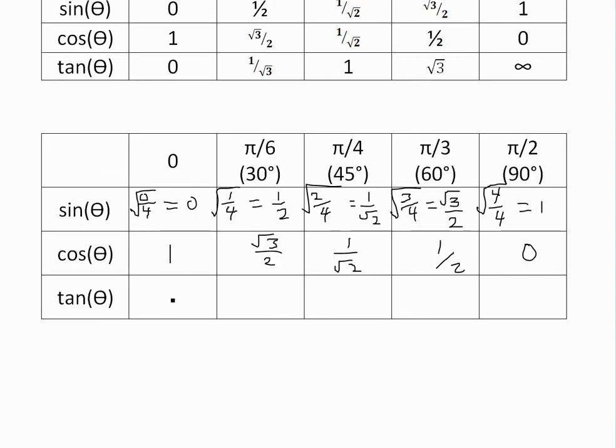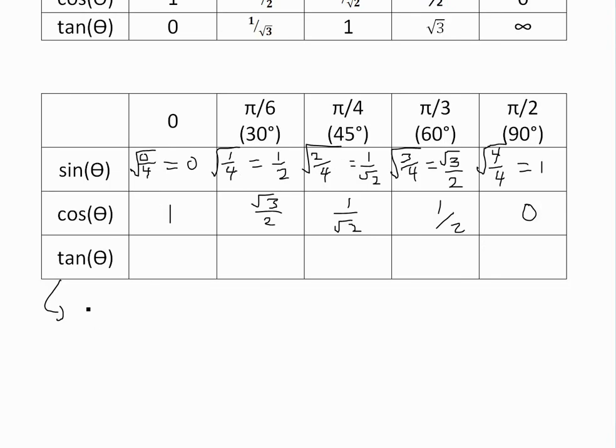And now the final one is tan(θ). This one by definition is equal to sin(θ) over cos(θ). Now this one is just, we'll divide it out. Zero divided by one is zero. 1/2 divided by √3/2, the twos cancel, we're left with 1/√3. This one here is just the same thing divided by itself, it's going to be one.